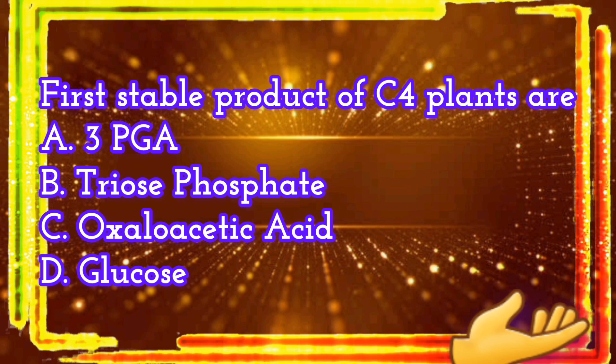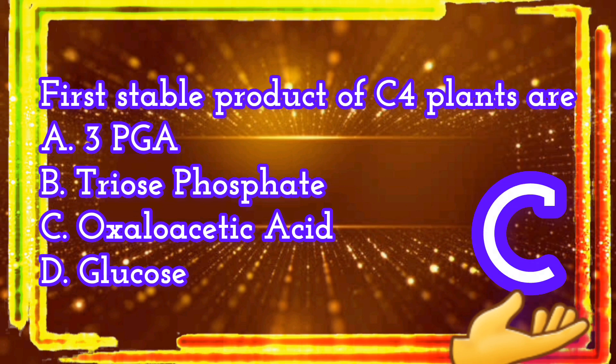First stable product of C4 plants are. A. 3-PGA. B. Triose phosphate. C. Oxaloacetic acid. D. Glucose. The correct answer is letter C. Oxaloacetic acid.